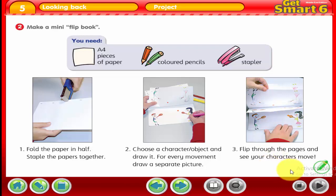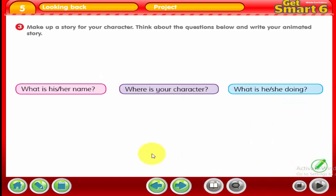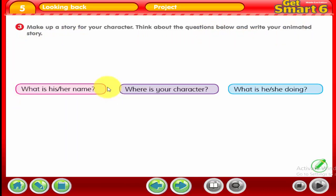When you flip through the pages of the book, you can see the characters move — it looks like the characters have action and movement in the picture. Activity 3: make up a story for your character. Think about the questions below and write your animated story.